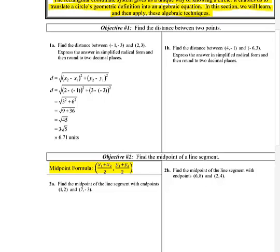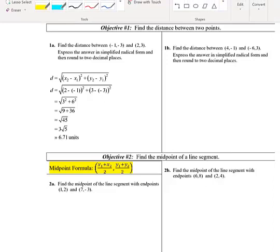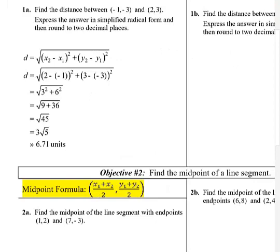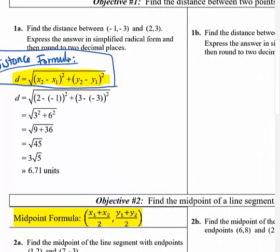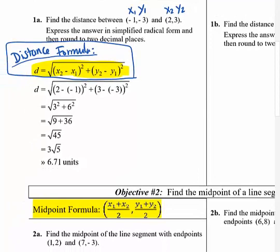First we'll talk about the distance between two points, then the midpoint, and then circles. The distance formula - here it is, go ahead and highlight it. It uses x2, y2, x1, y1. Label the first point x1, y1 as negative 1 and negative 3, and the second point x2, y2 as 2 and 3, then substitute them in.